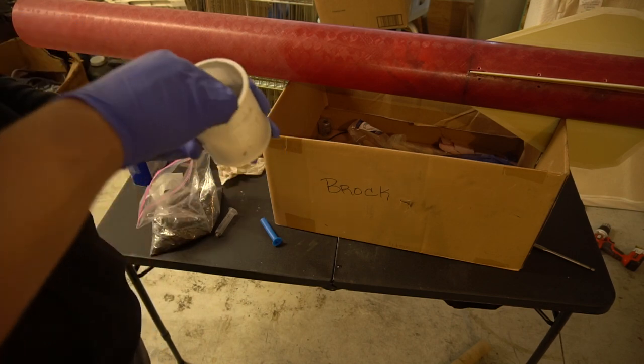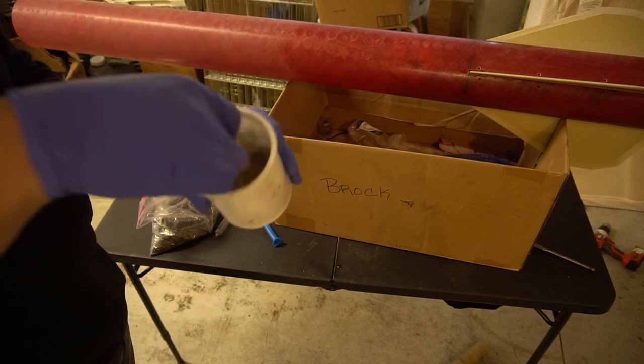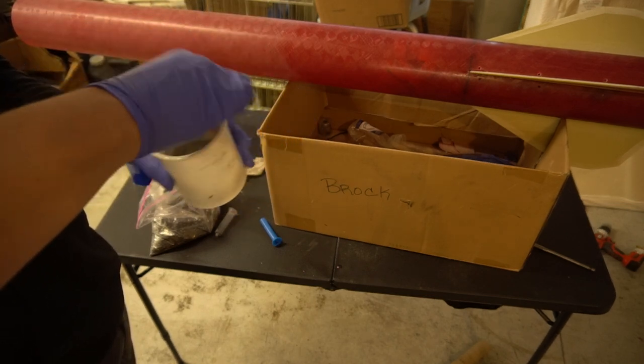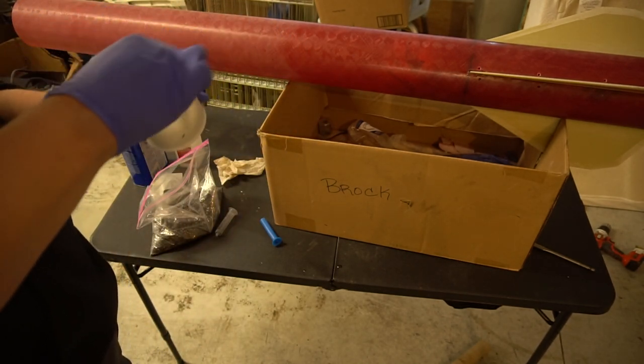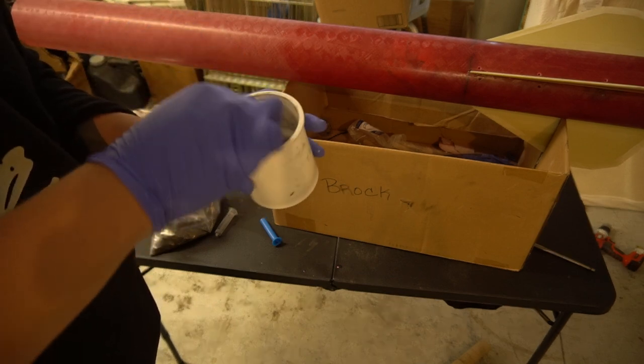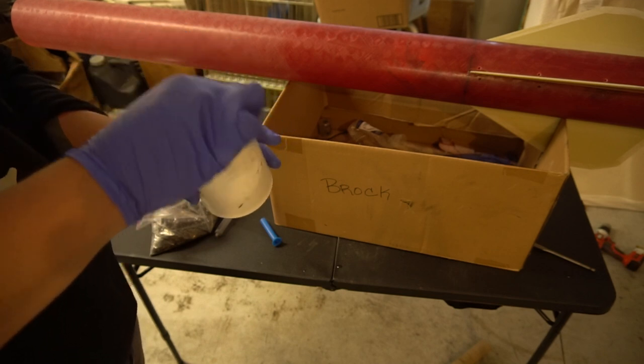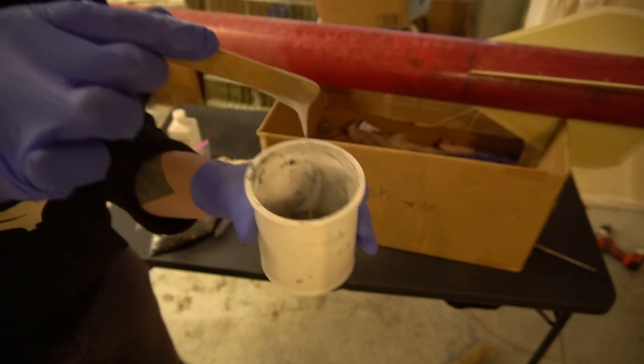Basically, the end goal here is you want it thick enough that it's not going to flow through any small openings there, like you saw it leaking a little bit, because we separated from the chopped carbon on the last batch. Also want it thin enough that it's going to level itself out and be smooth. But, there you can kind of see better, hopefully.